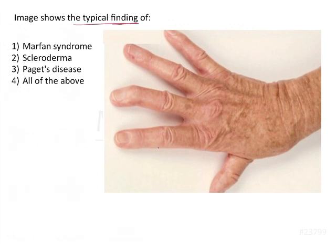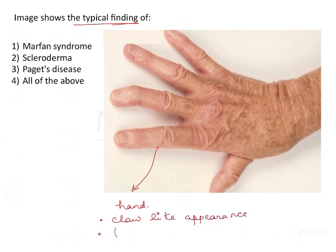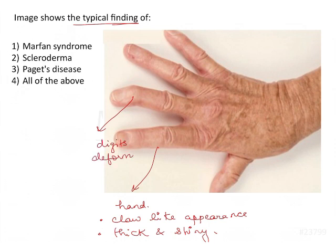The given image shows typical findings. We have an image of the hand, let's try to analyze this image. It has a claw-like appearance. The skin appears thick and shiny and there is deformation of the digits.